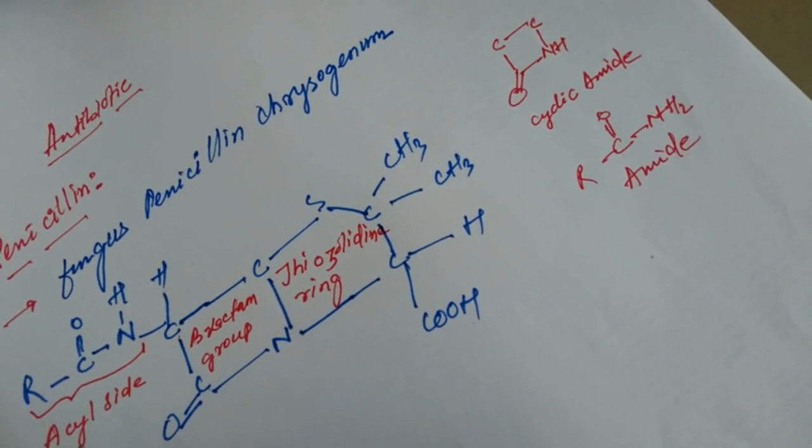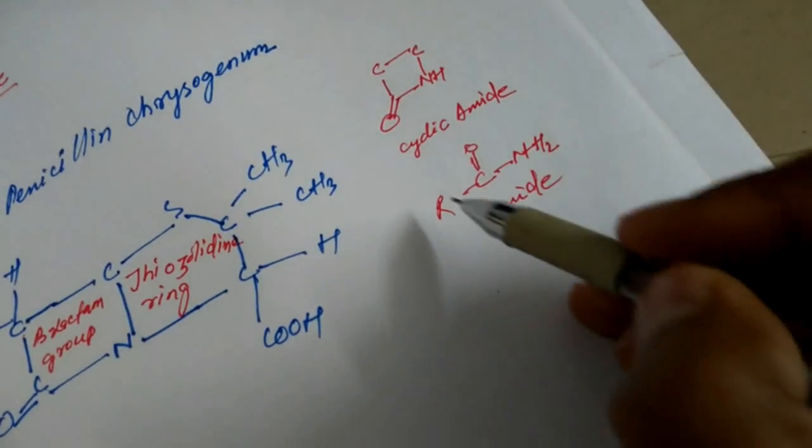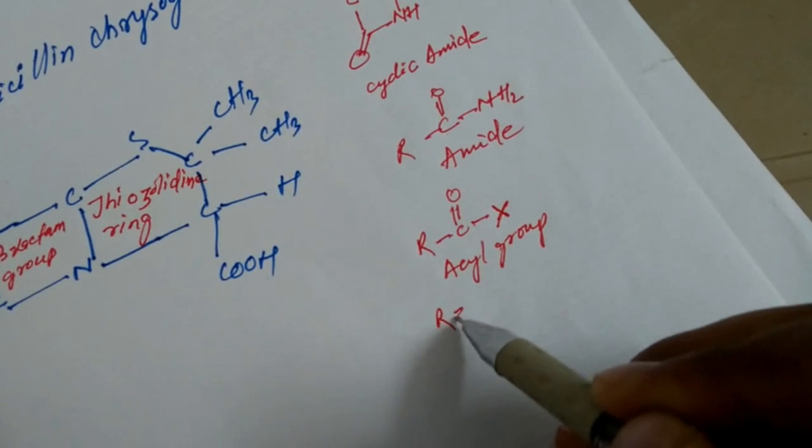What is the acyl group? You might be confused, so I am going to show it. You must know the acyl group, otherwise you will get confused. It is better to know it. This is carbon. This is the acyl group. This seems to be the acyl group, but X must be specified.